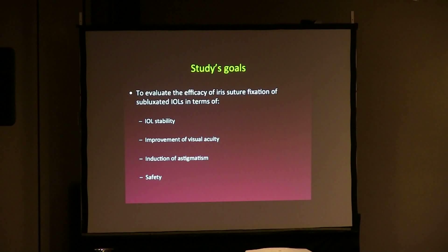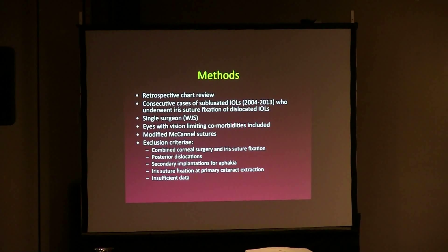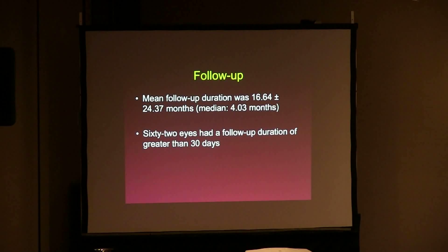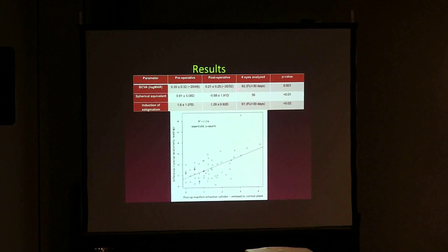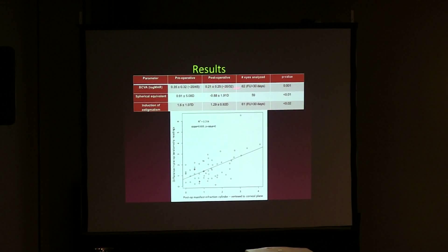We looked at our surgical outcomes focusing on IOL stability, visual acuity, induction of astigmatism, and safety. We included patients with comorbidities who had dislocated IOLs and excluded those who had combined corneal surgery or total posterior dislocation into the vitreous. We followed 62 eyes for a minimum of 30 days and a mean of about 16 months. Best corrected visual acuity improved in all patients, and the mean best corrected visual acuity improvement was statistically significant.